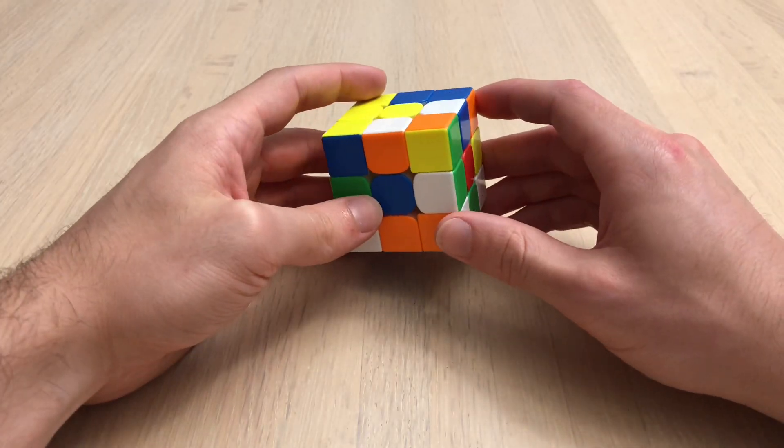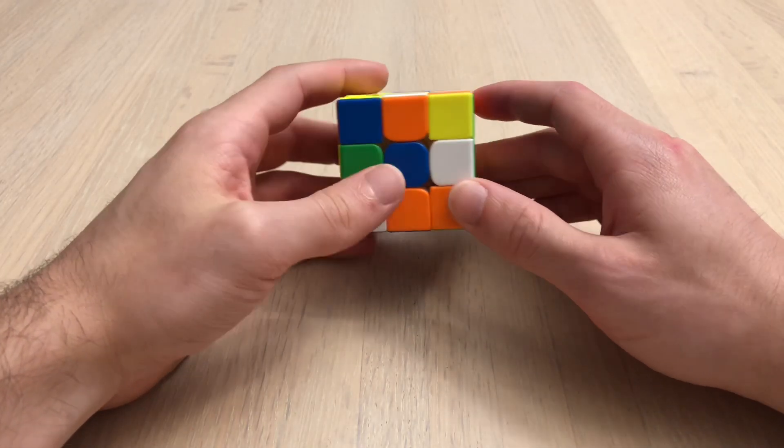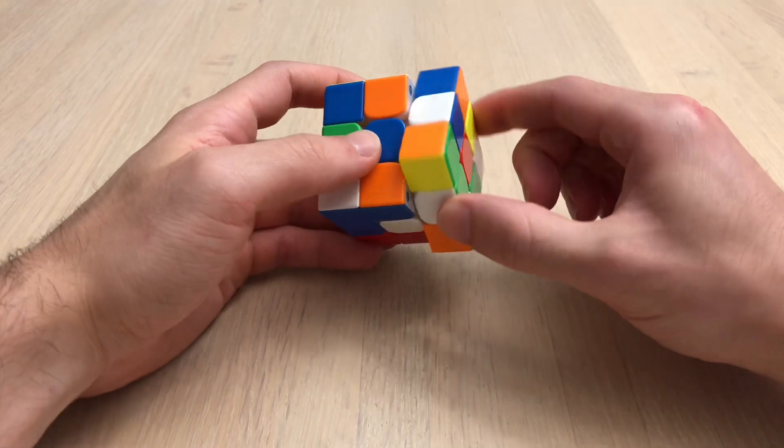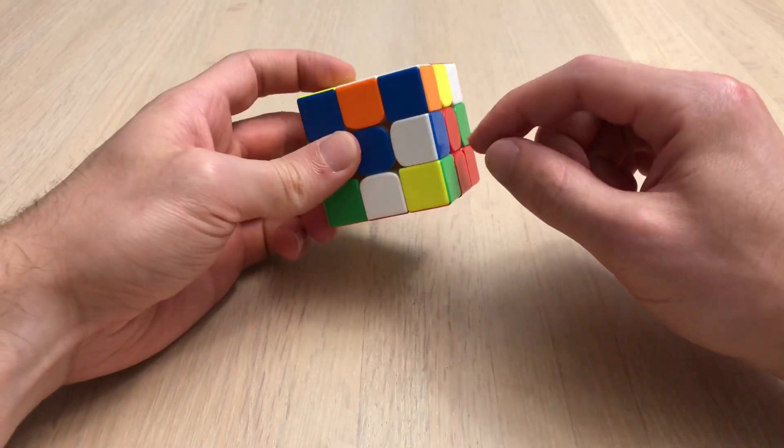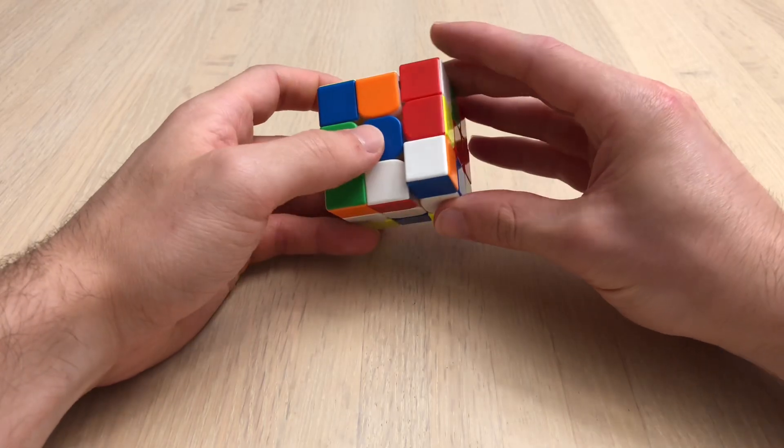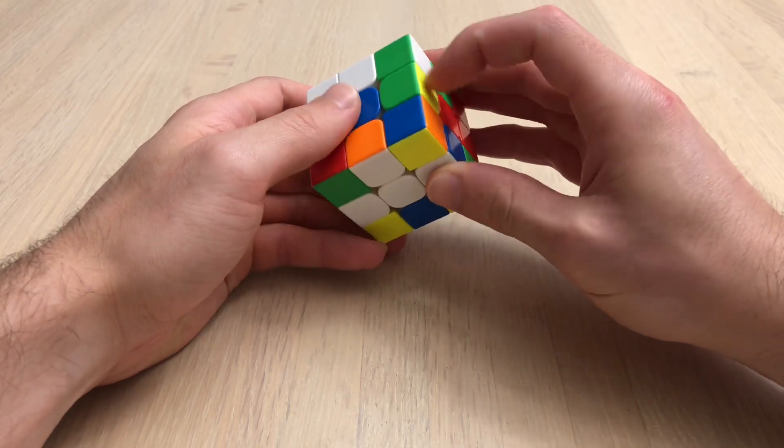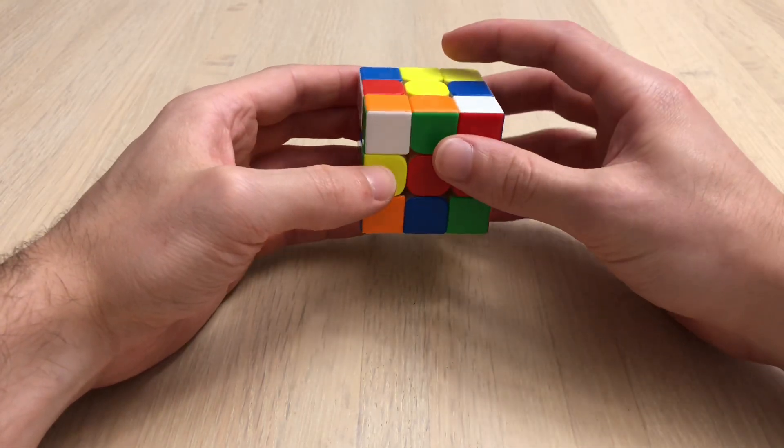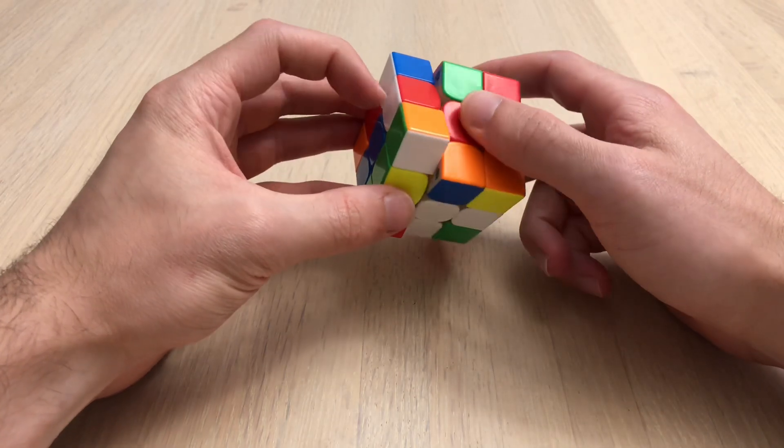Eighth scramble. What I'm going to do is put this green down, D2 to get opposite from blue. And then do these two cross edges, rotate, then this red one.